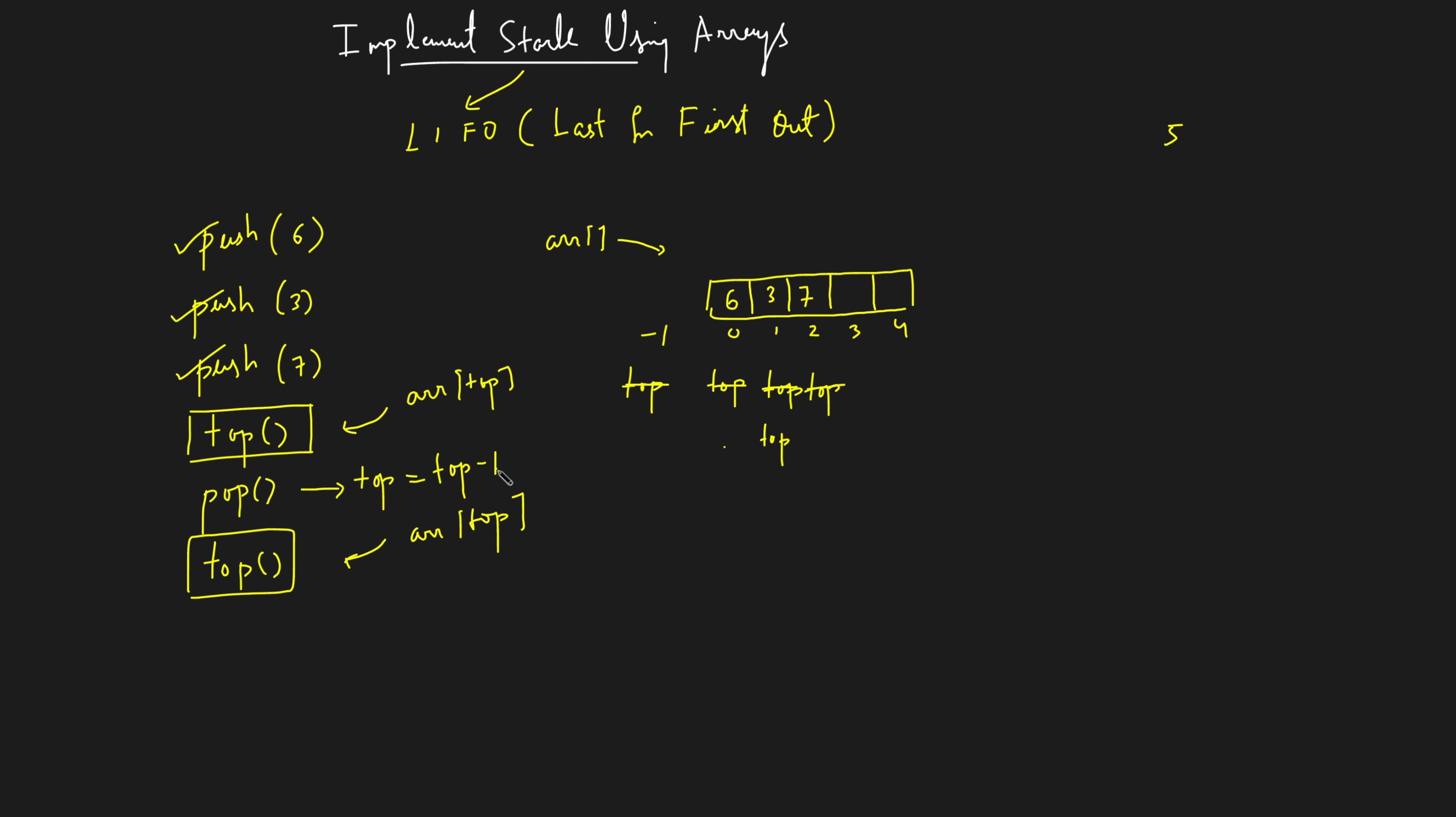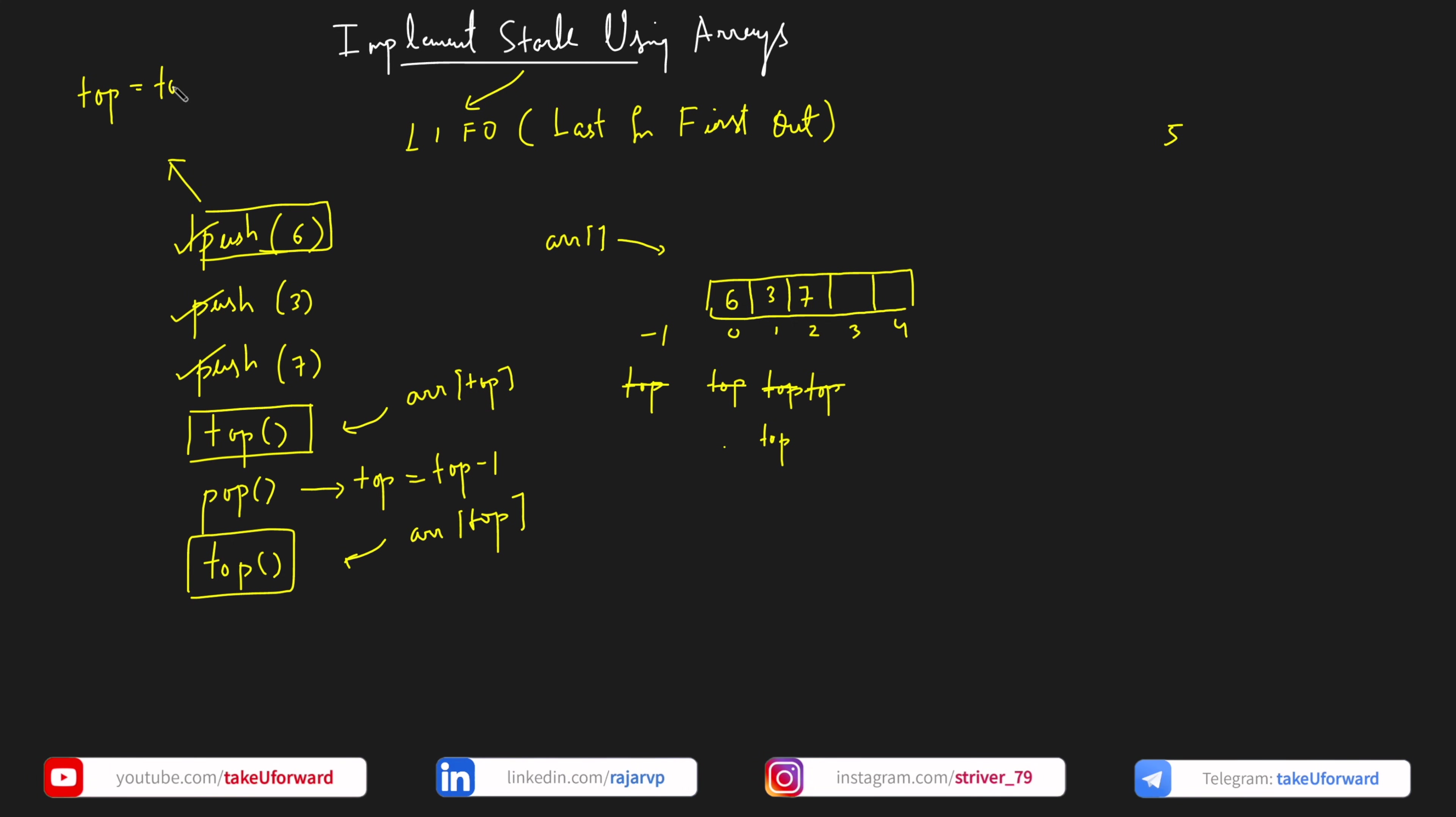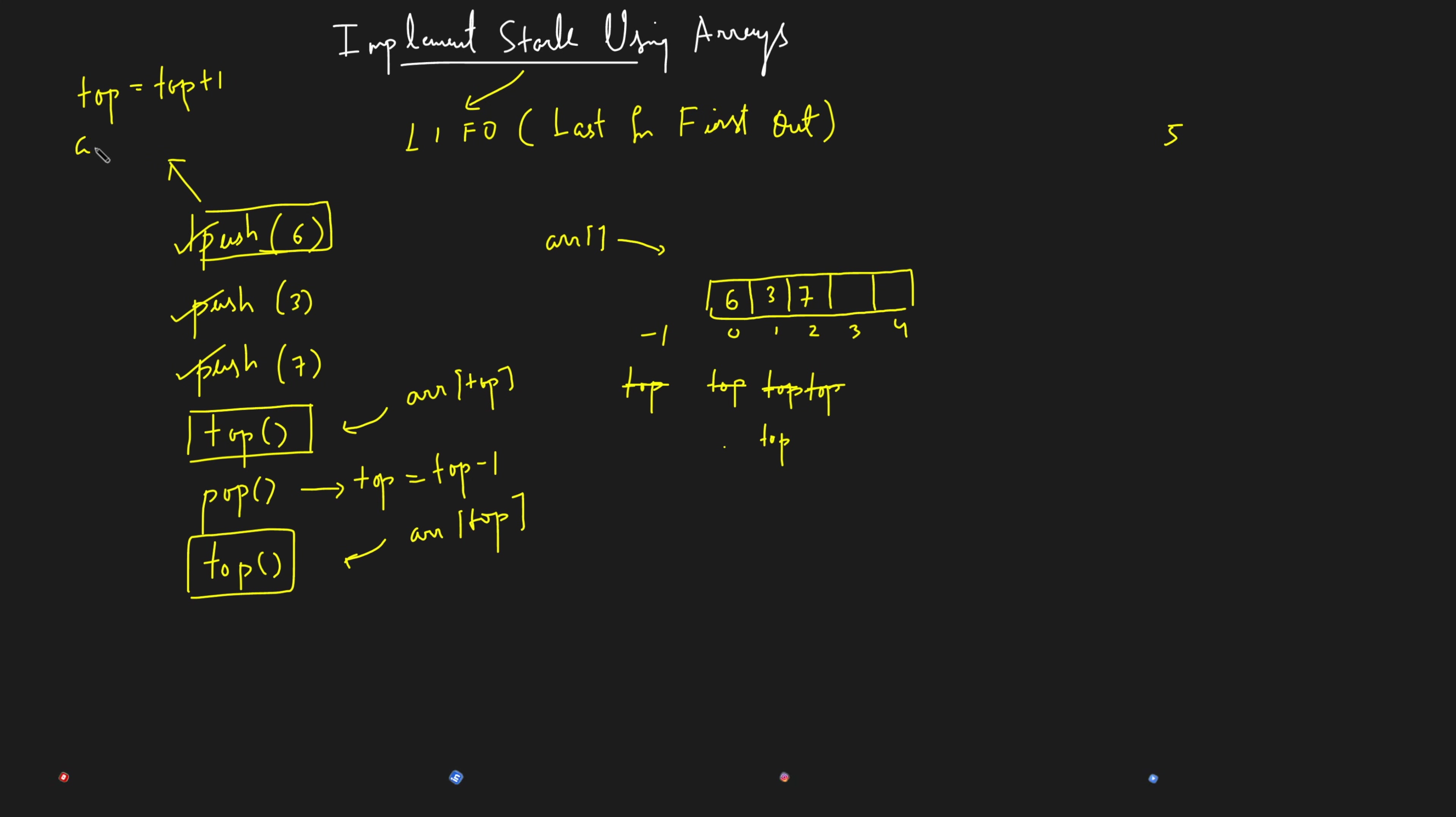And in order for pop to be performed you just reduce it by top equal to top minus 1. And in order to the push to be performed what will you do? At first you will do top equal to top plus 1 and then you will say hey array of top can you keep the element whichever I am giving you. So you keep the element el on your top index.